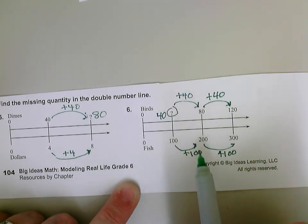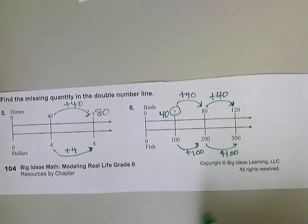80 to 200, 120 to 300. So when we're working with double number lines, we're just going to keep adding that same quantity that we had at the top and adding the same quantity that we had at the bottom.